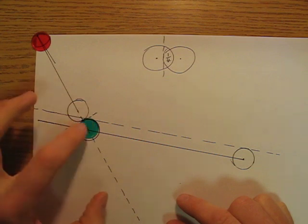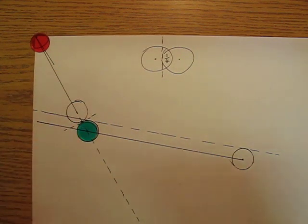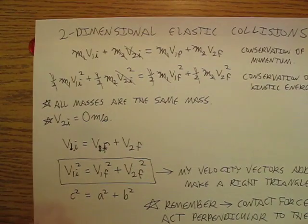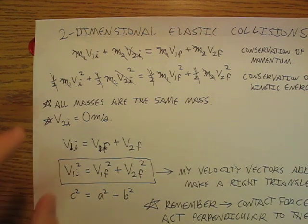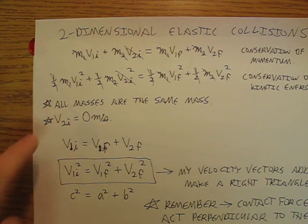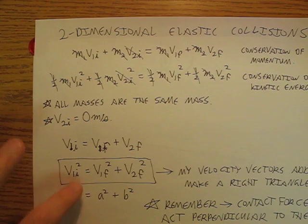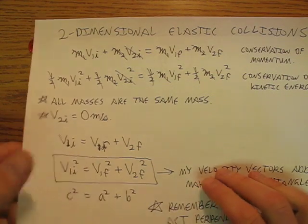But we know what's going to happen with the green ball, because from our previous work we said, well the velocity vectors, because of the simplifications that I made, that all the masses are the same, and the velocity of the red ball is initially zero meters per second, that my velocity vectors are going to make a right triangle.